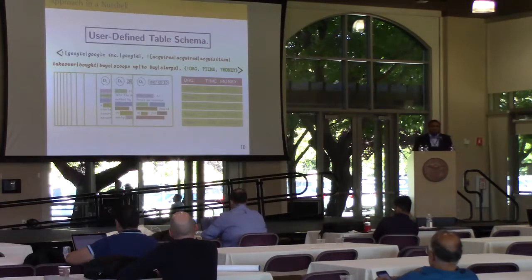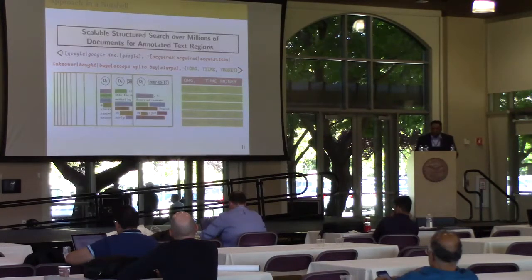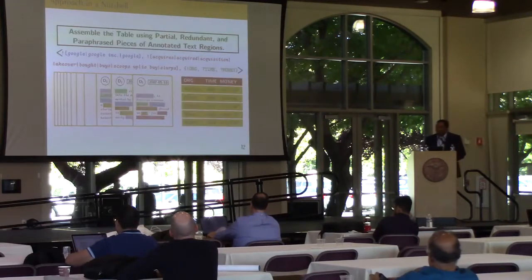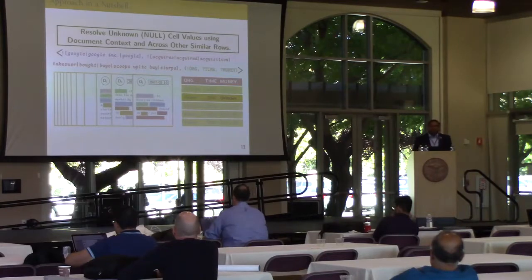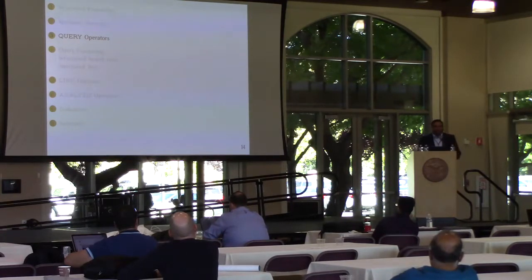The key contributions of our work are, first, that the user can define the schema of the table to be generated from text. For example, a query can stipulate: give me a table of all Google acquisitions—which company was acquired, on what date, and for what monetary value. We then use our indexing infrastructure to perform structured search over millions of documents within milliseconds to retrieve supporting sentences and build an initial raw table, then piece together partial and redundant text regions, and estimate null cell values using local context and global null resolution.